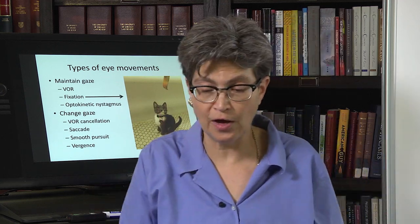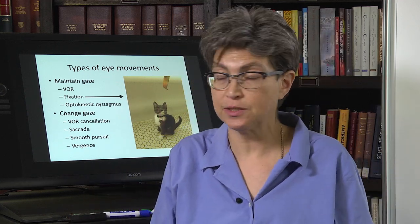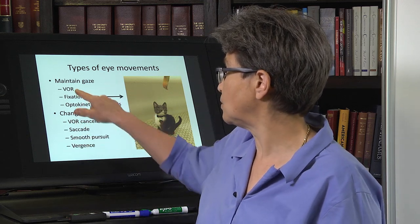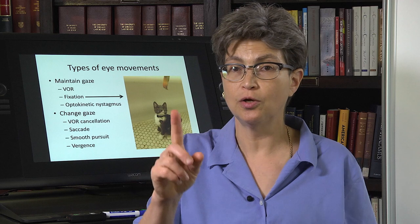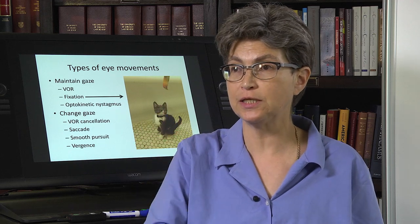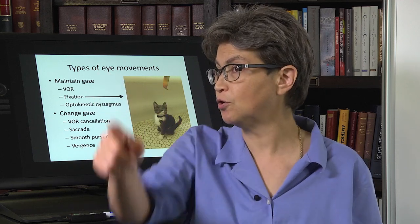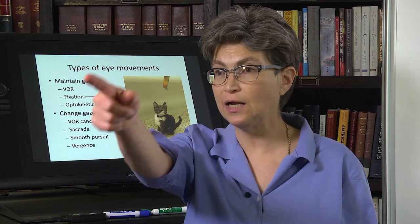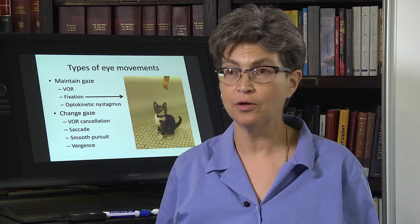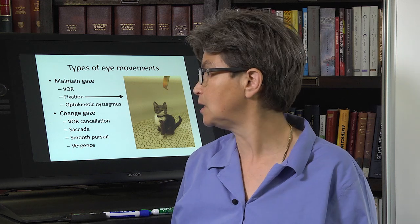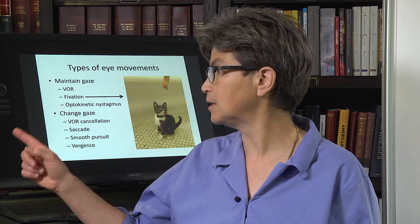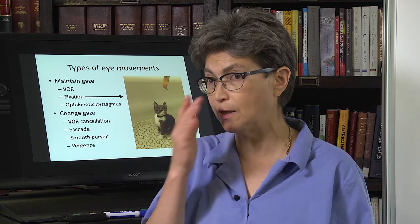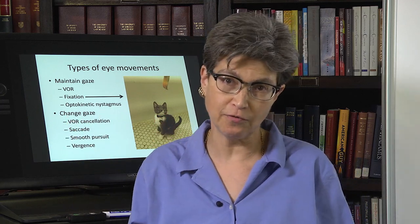The other type of eye movement is to change gaze. The first one is we can cancel the VOR. The VOR essentially lets me continue to look over there as I turn my head. But if I decide I want to look from there to there, I can keep my eyes in my head, cancel the VOR, and not have my eyes rotate back as I move my head. So that's a cancellation of the VOR.